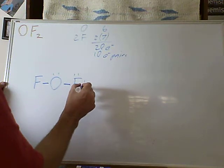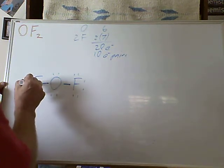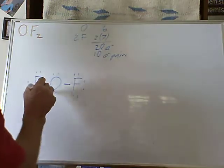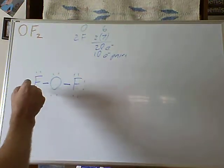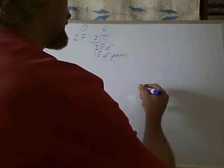1, 2, 3, 4, 5, 6, 7, 8. That uses all the electrons, and we see that we have 8 electrons on each of the atoms, so this is a good Lewis structure.